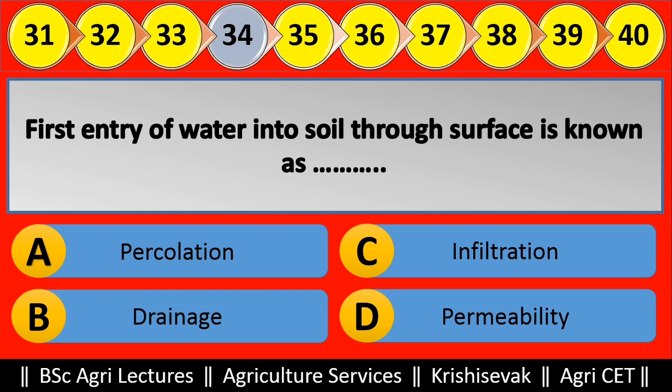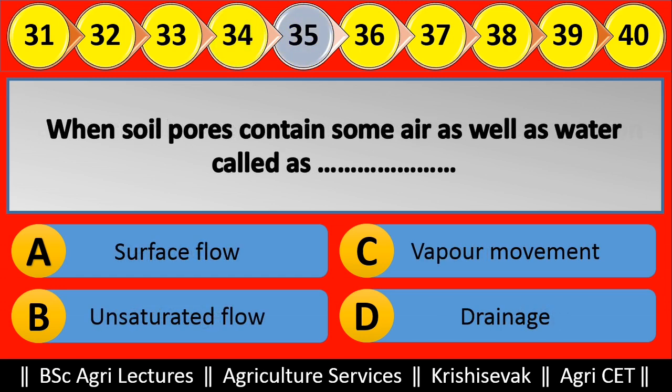Question 35: When soil pores contain some air as well as water, it is called blank. Options are: (a) Surface flow, (b) Unsaturated flow, (c) Vapor movement, (d) Drainage. Right answer is Unsaturated flow, option B.